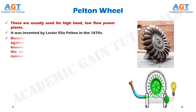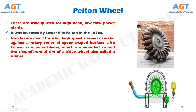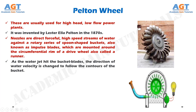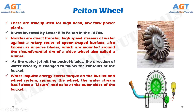Nozzles direct forceful, high speed streams of water against a rotary series of spoon shaped buckets, also known as impulse blades, which are mounted around the circumferential rim of a drive wheel also called a runner. As the water jet hits the bucket blades, the direction of water velocity is changed to follow the contours of the bucket. Water impulse energy exerts torque on the bucket and wheel system, spinning the wheel. The water stream itself does a U-turn and exits at the outer sides of the bucket.